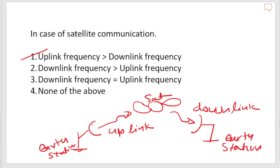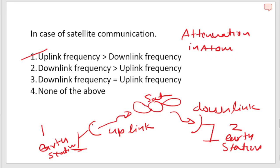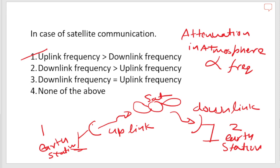Similarly, the second earth station can also communicate back to the first one using uplink and downlink frequencies. In the atmosphere, attenuation is directly proportional to frequency. Since the satellite cannot afford high power output, the downlink is sent at lower frequencies, while the earth station can afford to transmit at higher frequencies. That is why uplink frequency is greater than downlink frequency.